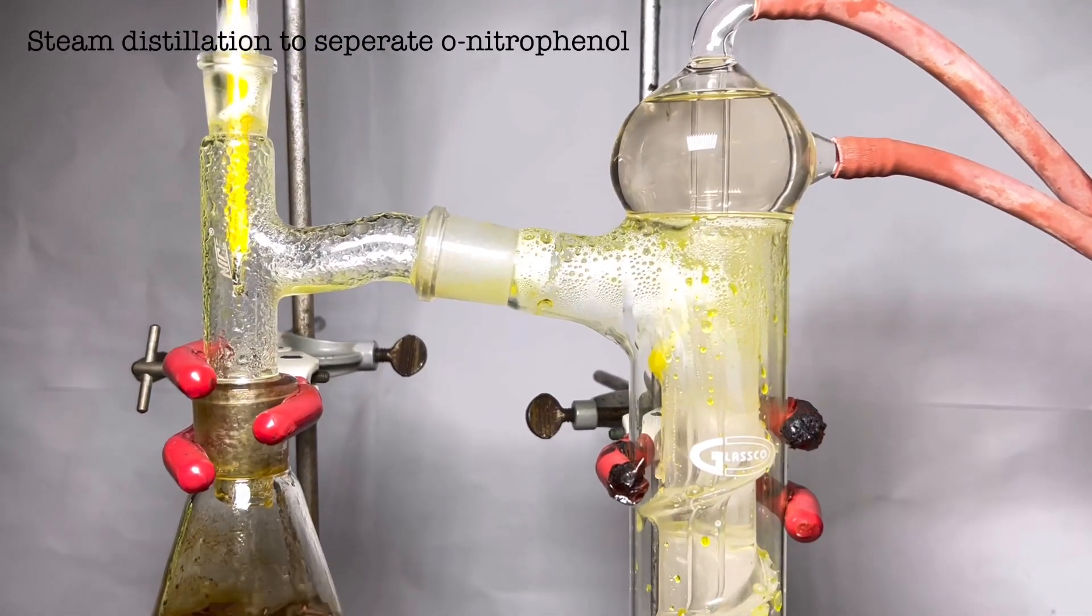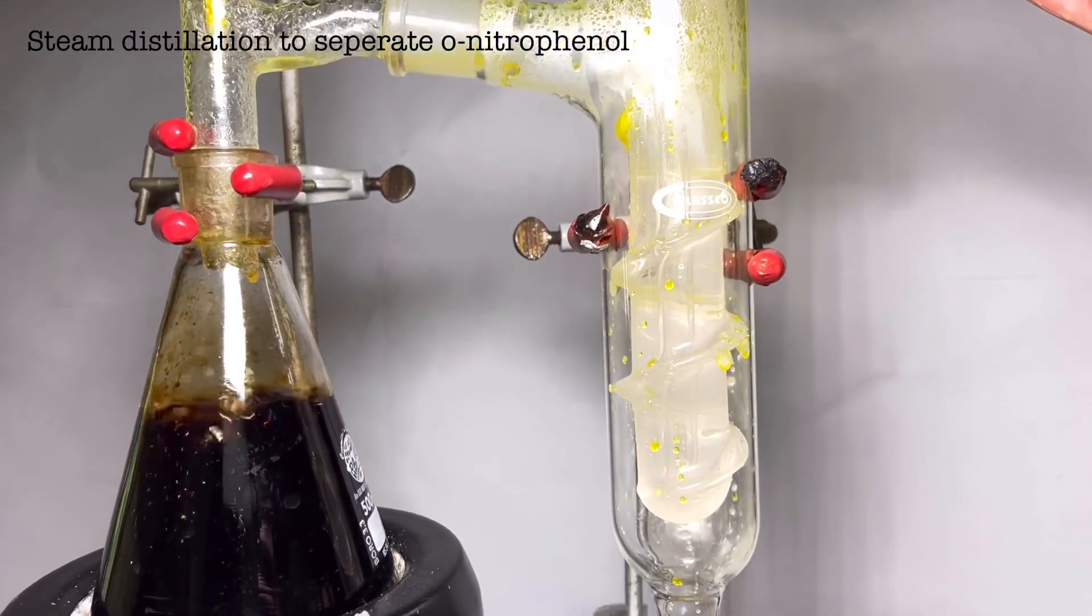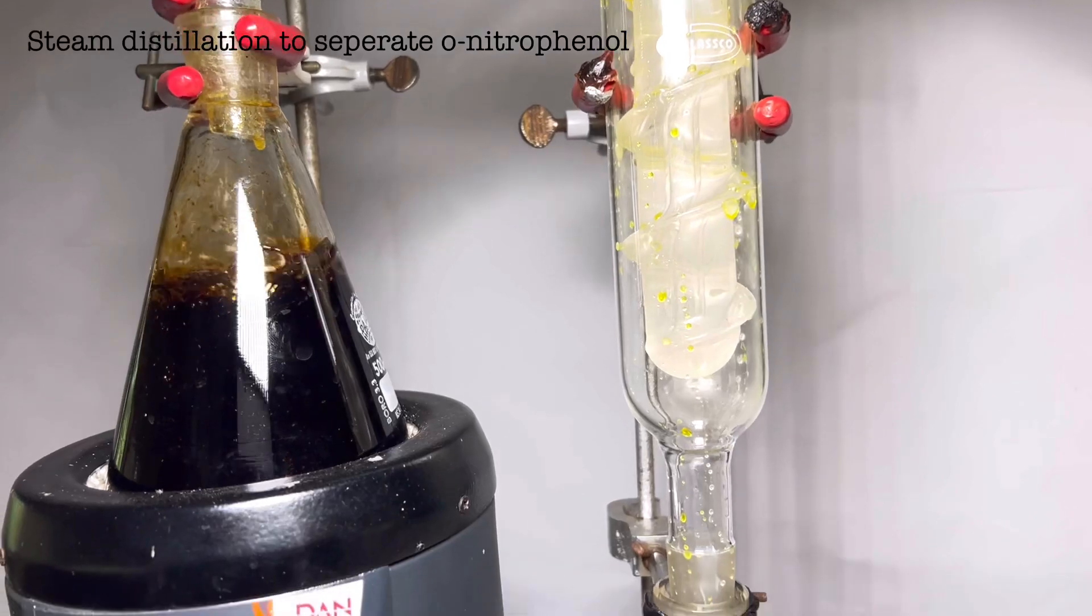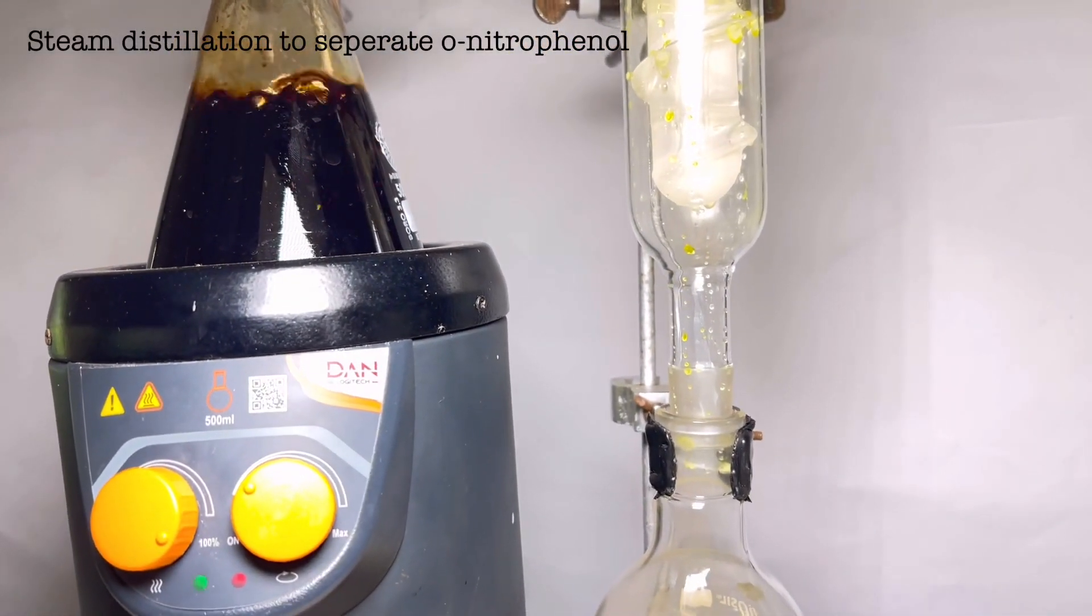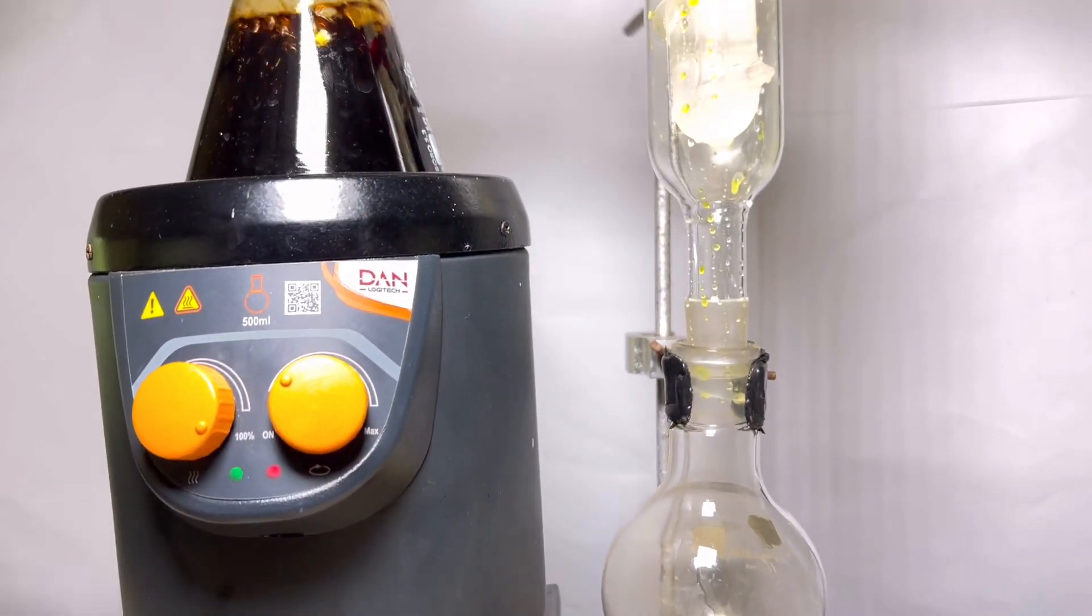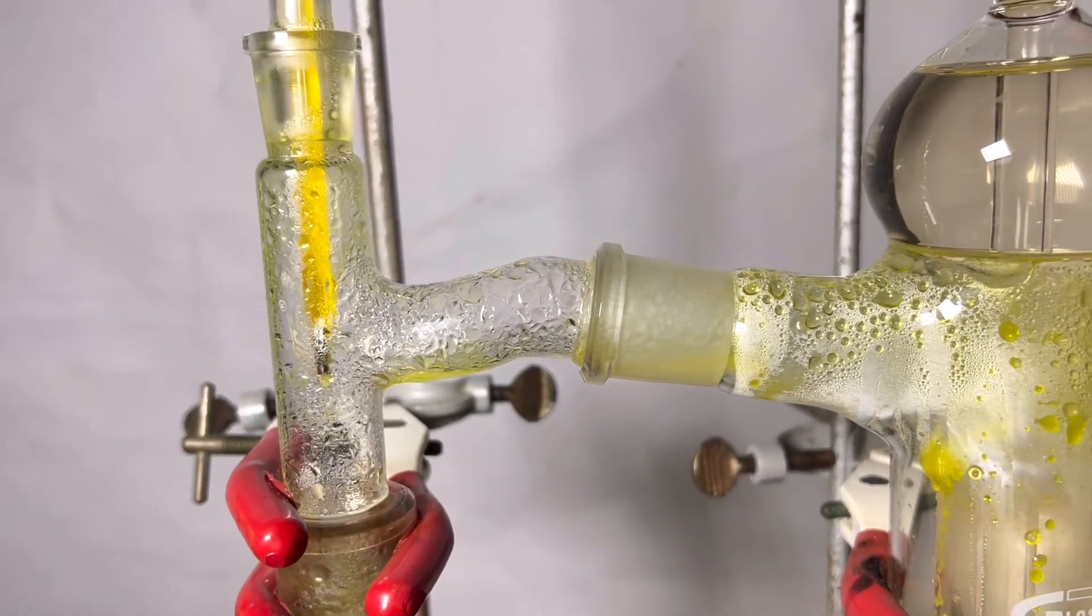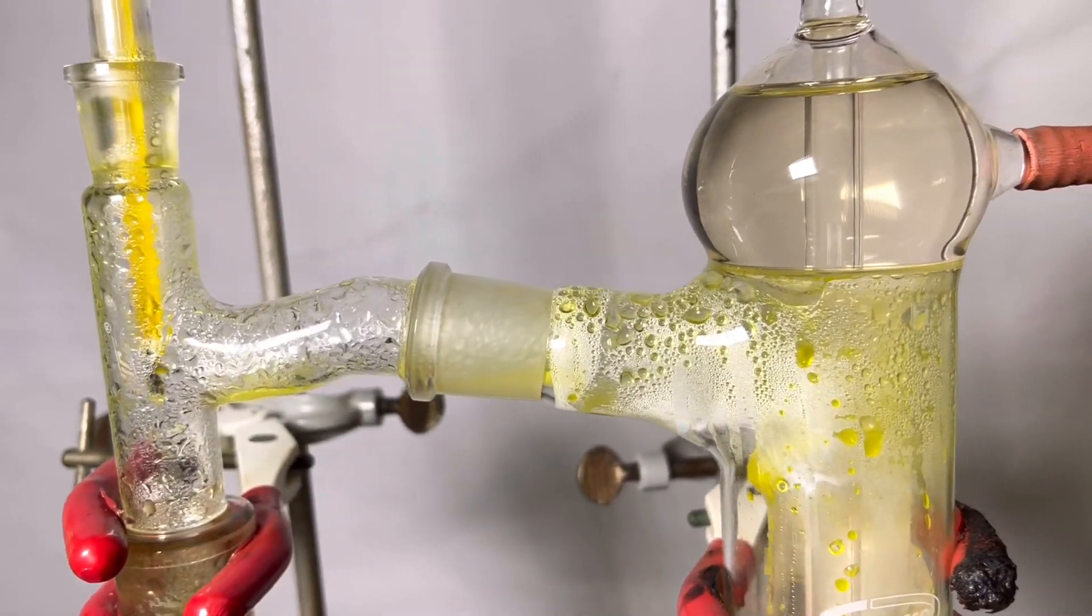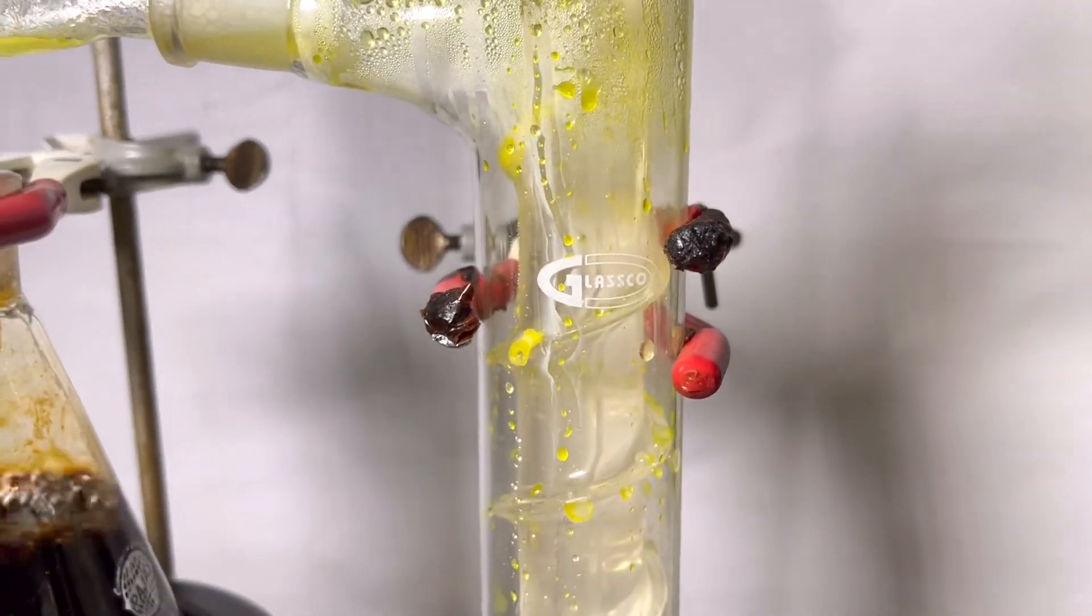Ortho-nitrophenol has a bright yellow color so it is very easily understandable here. We keep the distillation continuing until all the yellow color disappears from the condenser. Sometimes solid ortho-nitrophenol gets crystallized on the walls of the condenser and even in the distilling head. To make that go into the receiving flask, just stop the water circulation in the condenser. This will warm up the condenser column, liquefying the crystals.